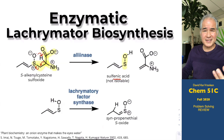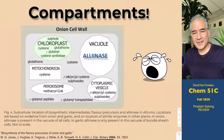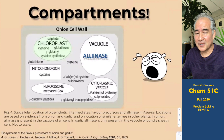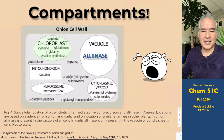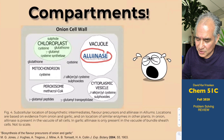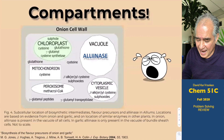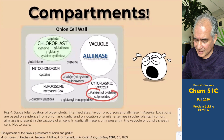Why aren't onions in the store emitting these fumes and causing everybody to cry? That's because onion cells are compartmentalized. Inside the onion cell, the enzyme alliinase is located inside of vacuoles, whereas the substrate for that first reaction is sitting in the cytoplasm or other vesicles — kept separate from the alliinase enzyme.